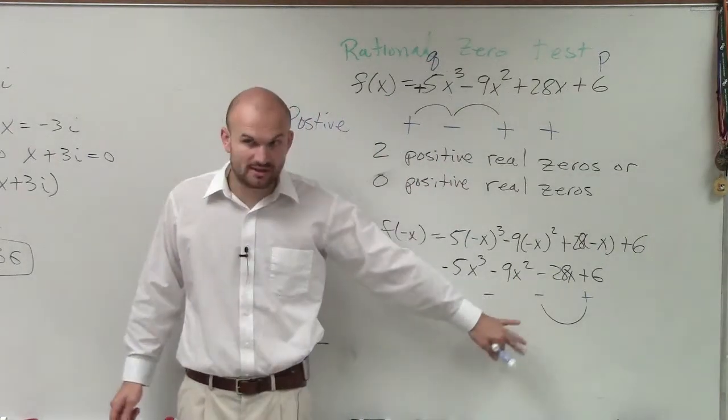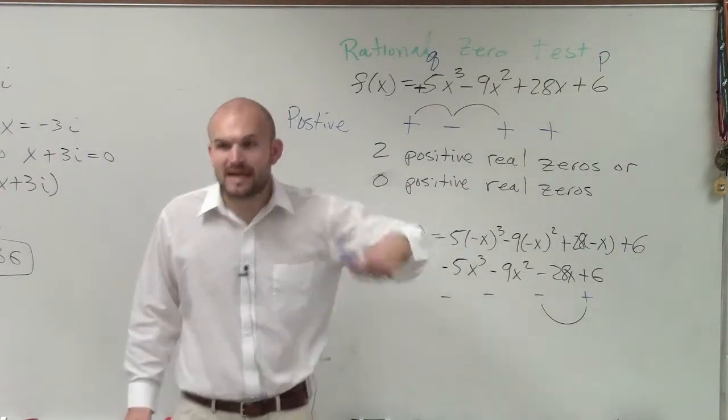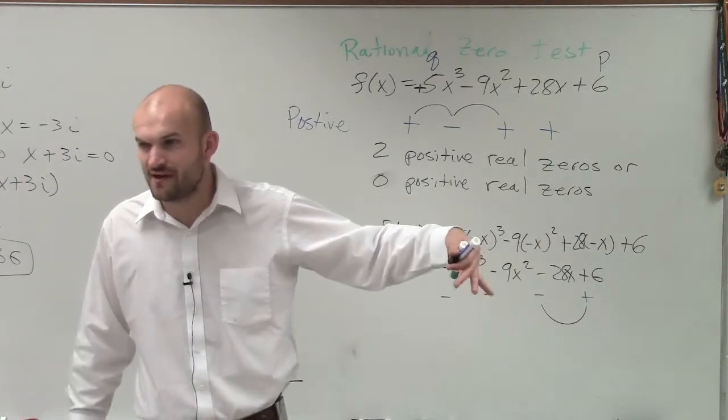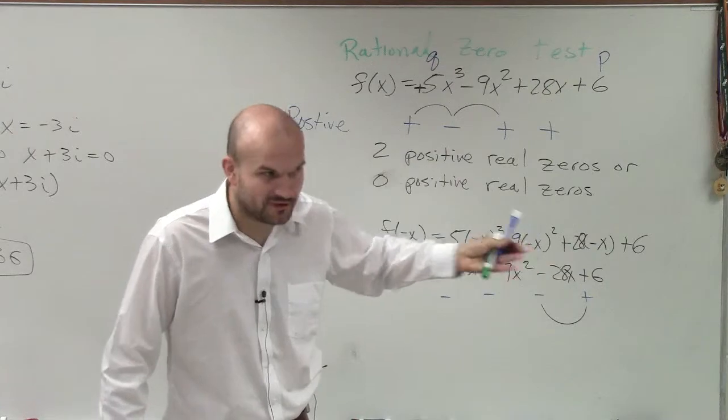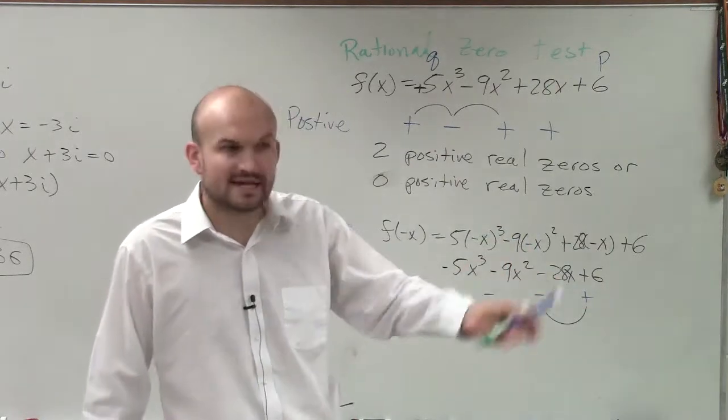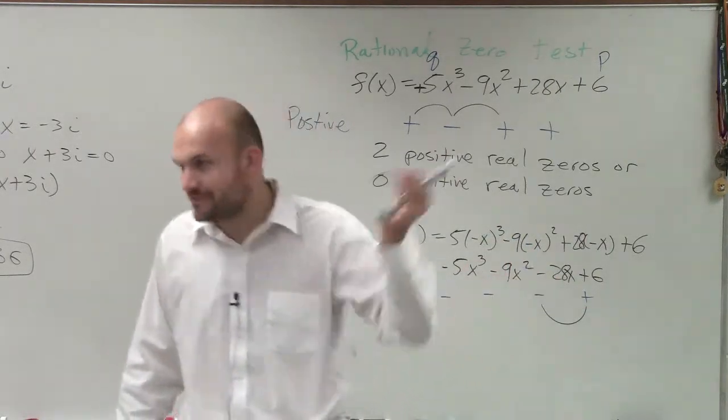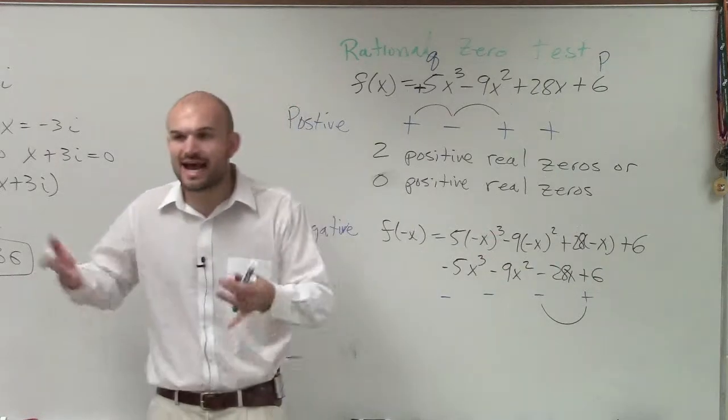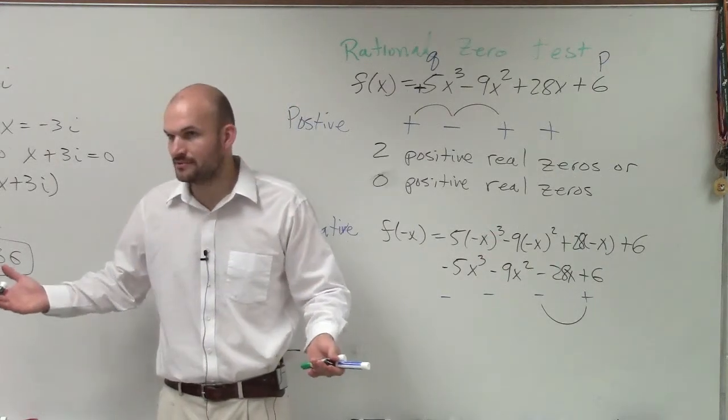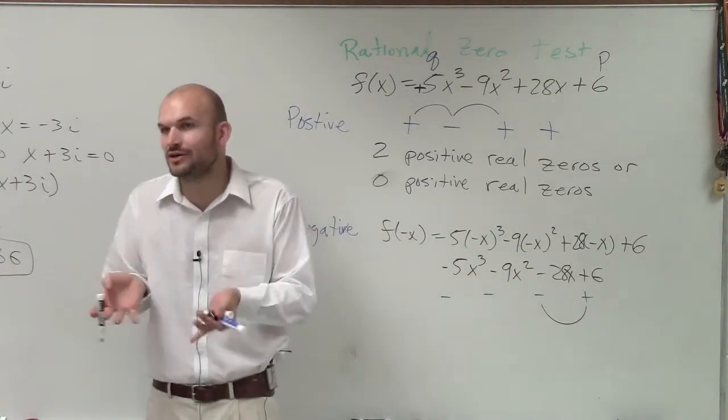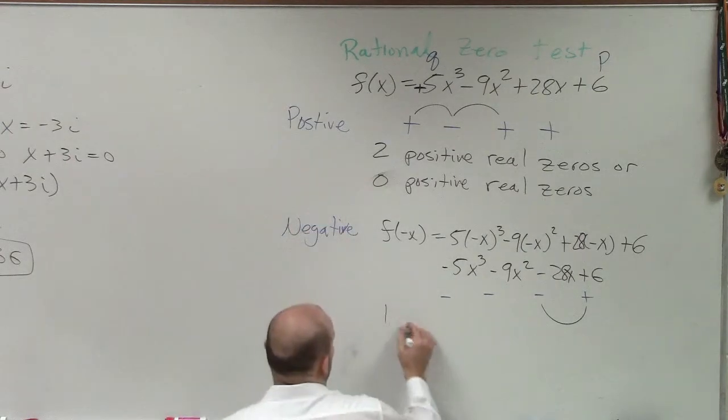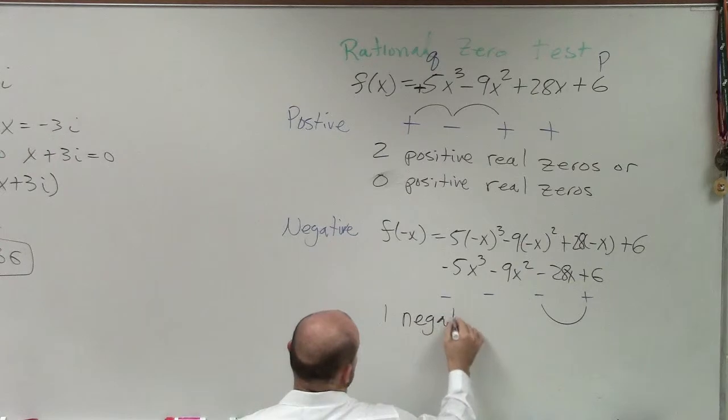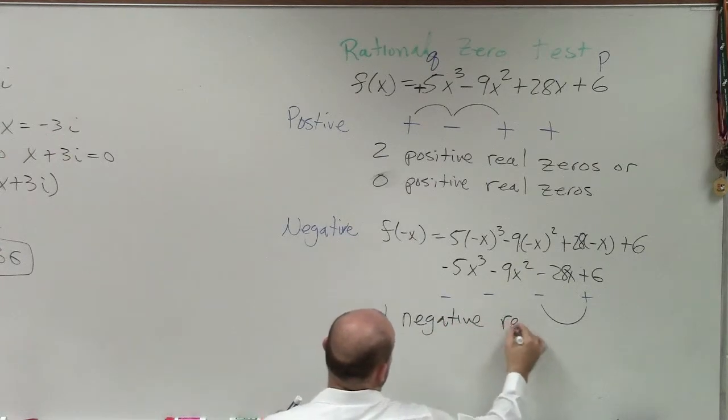But notice we have one negative zero. Now, can I subtract an even number from one and still have a value? Well, yeah, you'd get a negative. If you subtract two or four or six, an even number from one, you're going to have a negative answer. You can't have negative number of zeros. You're counting number of zeros. You can't have a negative value. So therefore, there's only going to be one negative real zero.